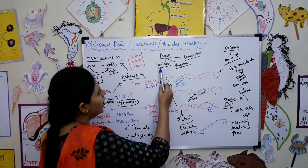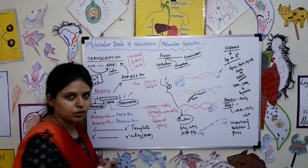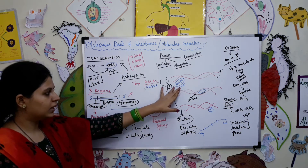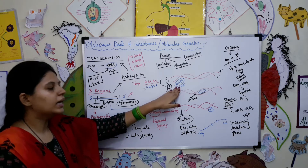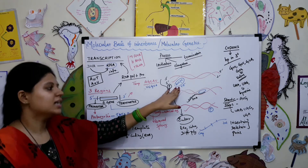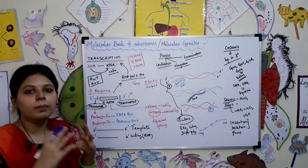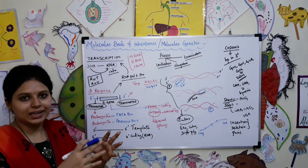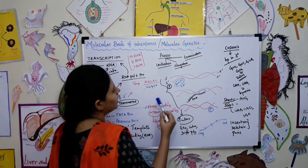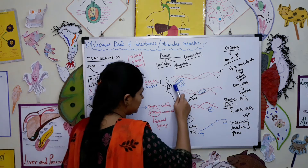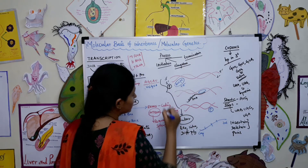Now we will start with initiation. In the promoter region, RNA polymerase along with the sigma factor initiates the process. The sigma factor is indicated by the symbol sigma, and that is how initiation — the starting of the process — takes place.